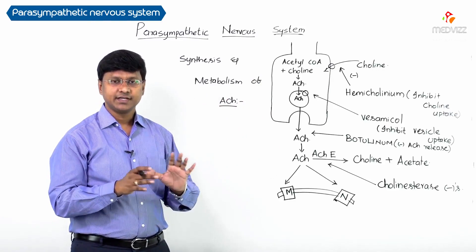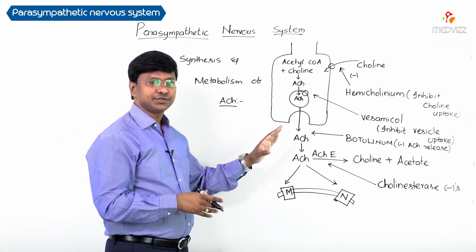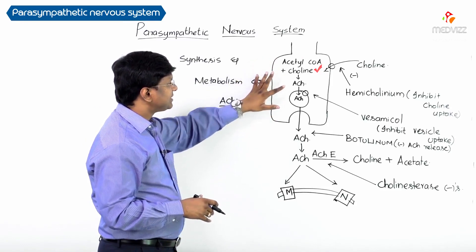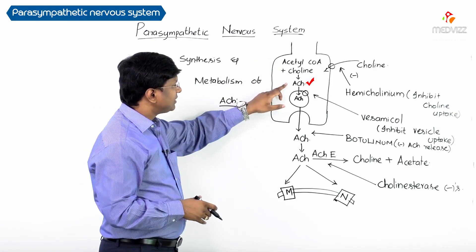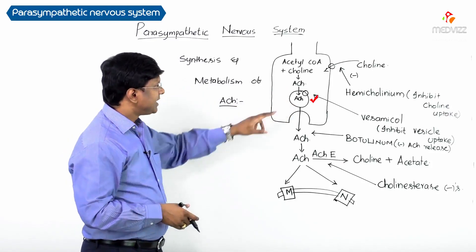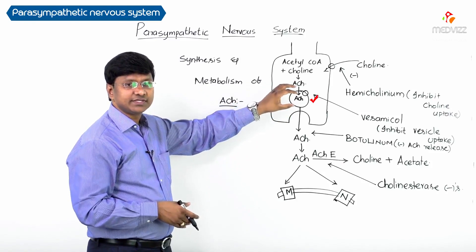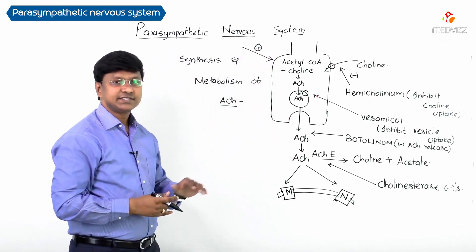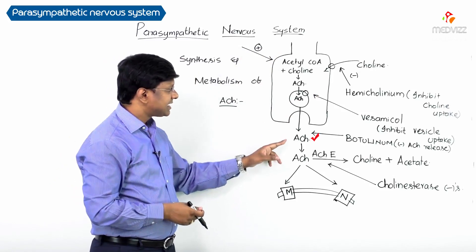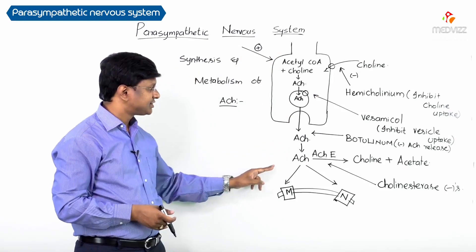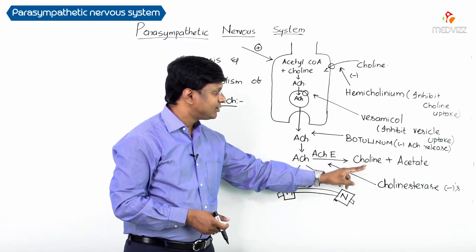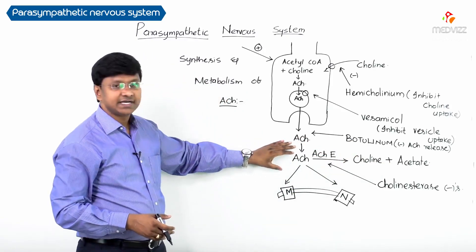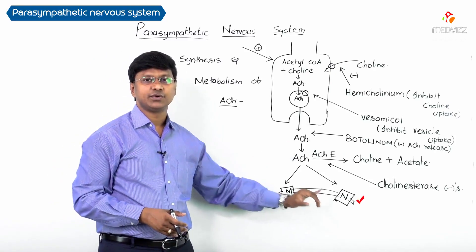To revise: in the cholinergic neuron, acetylcholine is formed by the combination of acetyl plus choline. The acetylcholine formed is taken up and stored within vesicles. Upon stimulation, acetylcholine is released into the neuromuscular junction, where acetylcholinesterase converts it into choline plus acetate, or it acts on muscarinic and nicotinic receptors.